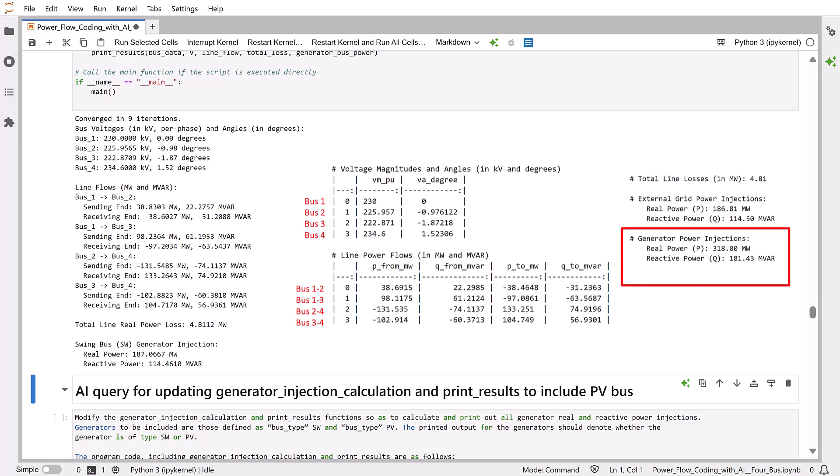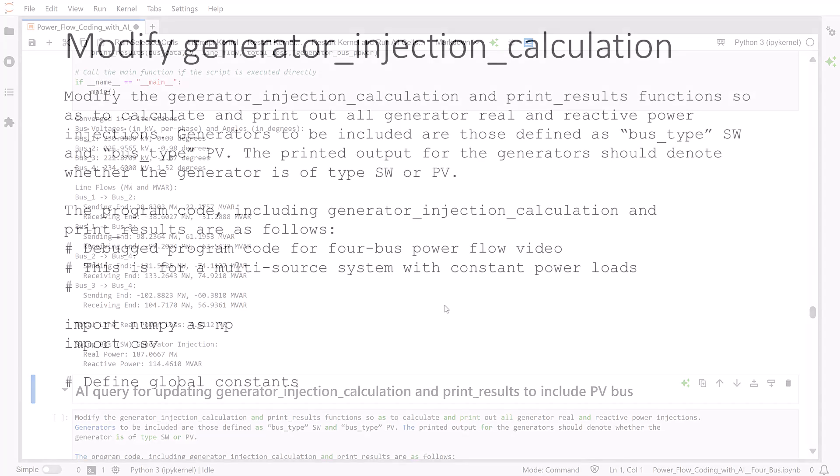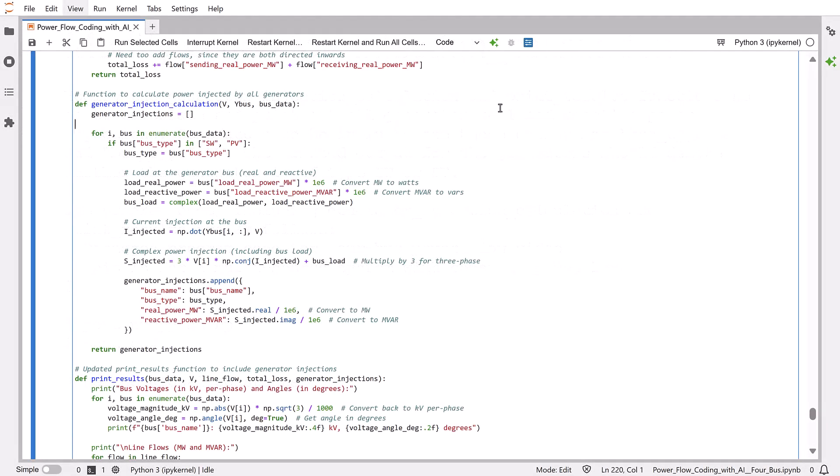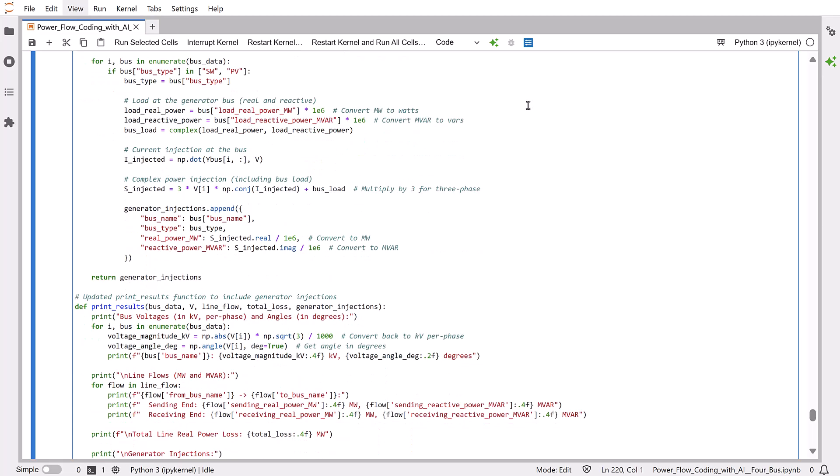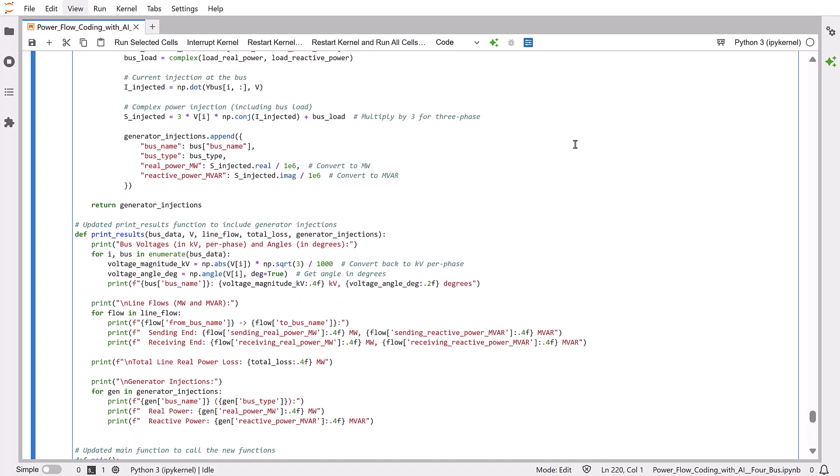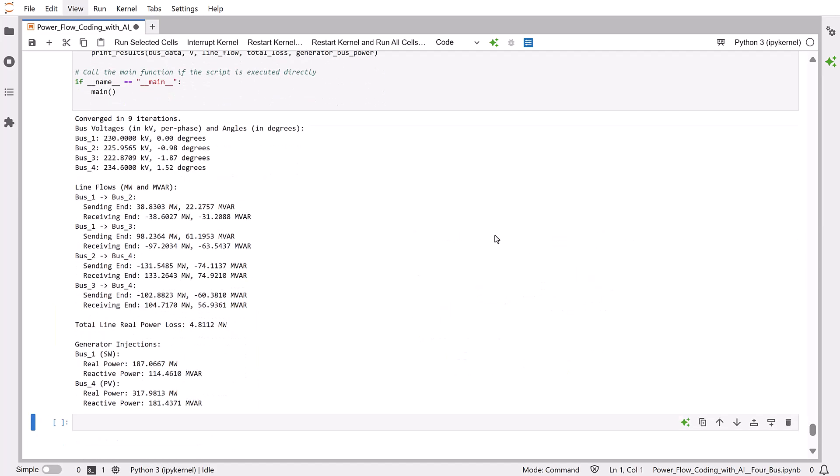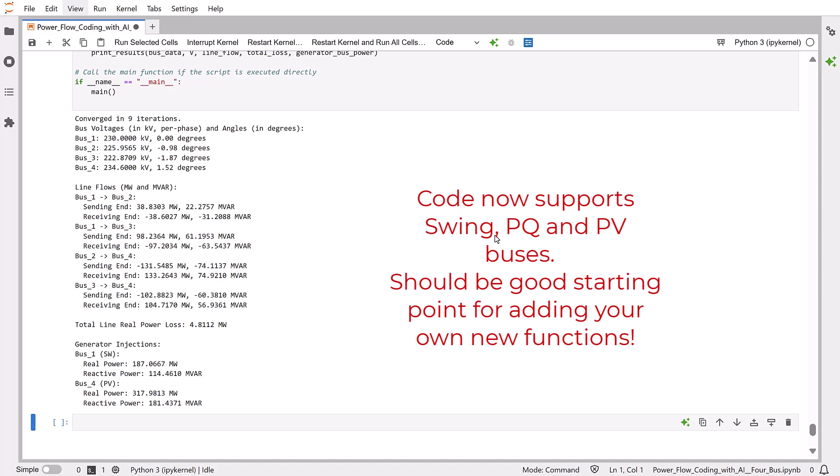Notice that the power injection for the generator is not provided in the output results. So, this additional functionality must now be added. Finally, we need to modify the generator injection calculation and print results functions. This shows the request I have put together for modifying the original code so as to include PV power injections. The results from the chat GPT query are then copied and pasted into our latest code version. Looking at the code, we see where the logic has been added for calculating and printing power injection for both PV and swing buses. When this code is executed, we get the correct results as compared to our benchmark case. So, finally, we have a Powerflow program that can handle all three bus types.